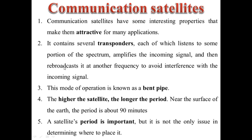These satellites have attractive properties for many applications. Each satellite has many transponders. A transponder listens to a portion of the spectrum, amplifies the incoming signal, then rebroadcasts it as necessary, avoiding interference with the incoming signal. This mode of operation is also known as bent pipe. The higher the satellite, the longer its period. Near the surface of the Earth, the period is about 90 minutes.